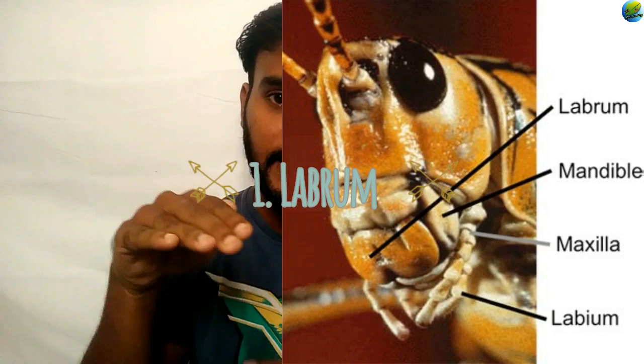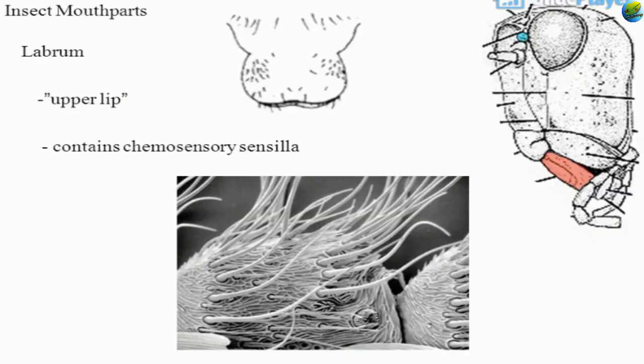The first mouth part is the labrum. It is like the upper lip of the insect mouth part, located just below the clypeus, which is a sclerite. The labrum is situated on the upper side, moving up and down to close and open the mouth. It protects the other mouth parts like mandibles and maxillae when they are not working, and also guides food inside the mouth cavity.